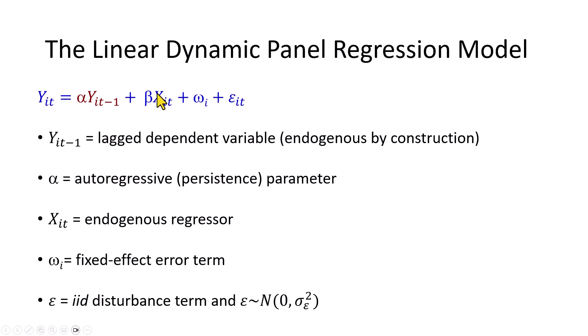X here is the endogenous regressor. Omega here is a fixed effects error term. And epsilon is the IID white noise error term.